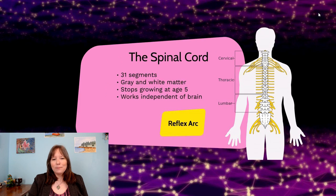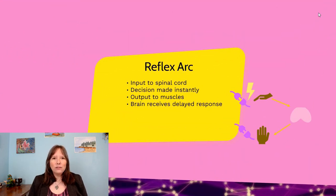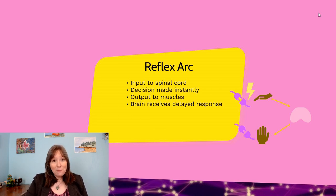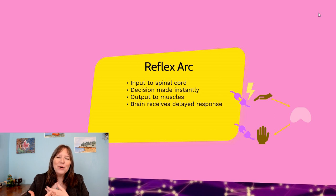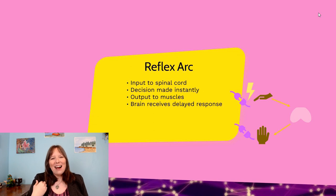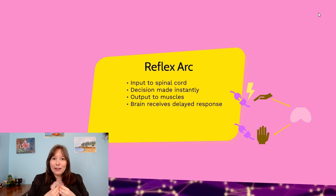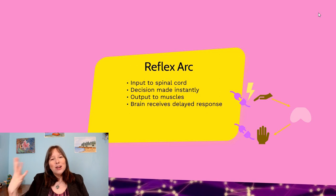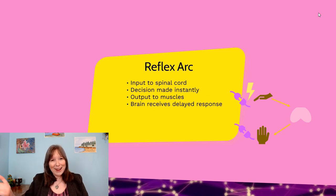One of the best ways to see how the spinal cord works independently is through the reflex arc. The classic example: you touch something with your hand — a hot stove, a spiky cactus, or a mild electric shock. That pain or temperature signal travels up your hand and eventually connects to neurons linked to your spinal cord. Once that intense signal reaches the spinal cord, it's so intense that the spinal cord makes the immediate decision to send a relay of neurons back to your hand, so you let go.